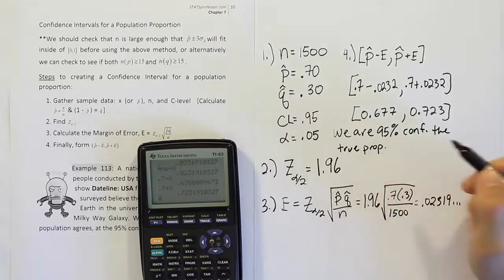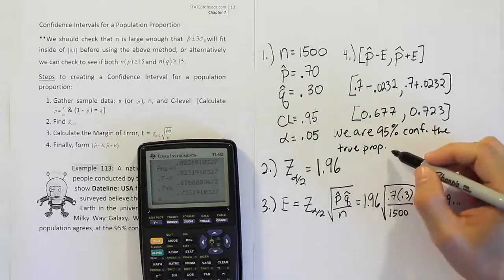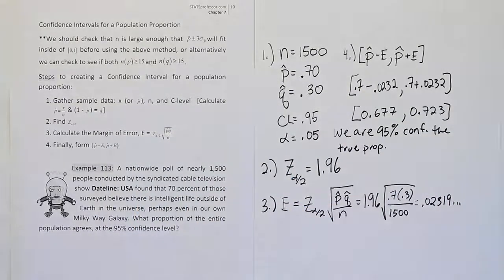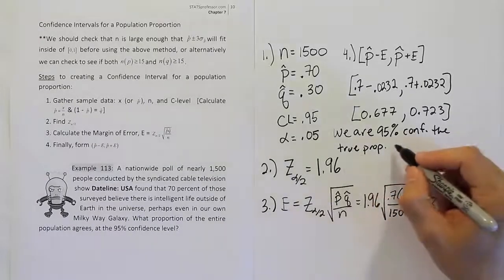You can say the true proportion of people who believe in aliens, but we can just leave it as true proportion, because the person can come over here and just look at the paragraph and see what the problem is about. But we are 95% confident the true proportion is between.